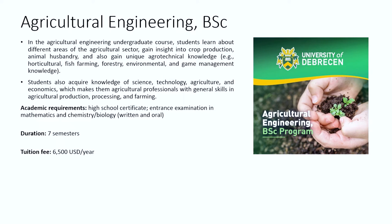The first is the agricultural engineering bachelor's degree. Students learn about different areas of the agricultural sector, gain insight into crop production, animal husbandry, and also gain unique agro-technical knowledge — for example, horticultural, fish farming, forestry, environmental, and game management knowledge. Students also acquire knowledge of science, technology, agriculture, and economics, which makes them agricultural professionals with general skills in agricultural production, processing, and farming.